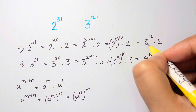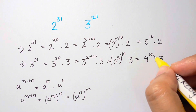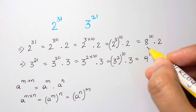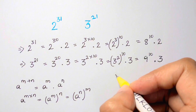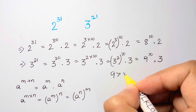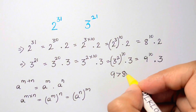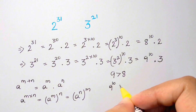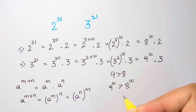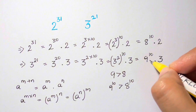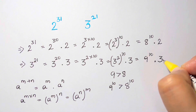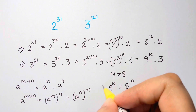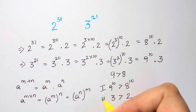3 squared is 9, so this becomes 9 to the power of 10 times 3. Now I've got 8 to the power of 10 times 2, and 9 to the power of 10 times 3. What can you observe? The exponents are the same — both are to the power of 10. What about the bases? 9 and 8 — which one is greater? 9 is greater than 8, so 9 to the power of 10 is greater than 8 to the power of 10. And 3 is greater than 2.